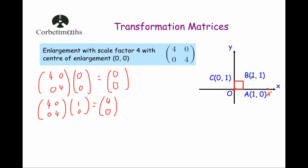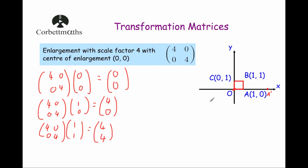Now let's multiply point B, the point 1, 1, by the transformation matrix 4, 0, 0, 4. Multiplying: 4 times 1 is 4, 0 times 1 is 0, adding them together is 4. Then the second row: 0 times 1 is 0, 4 times 1 is 4, adding them together is 4. So point B moves to the point 4, 4 — that's B dash — which is where it would move if you enlarge by a scale factor of 4.